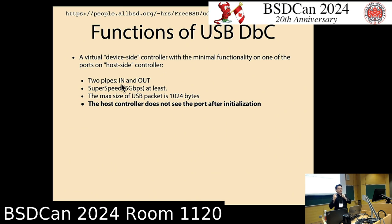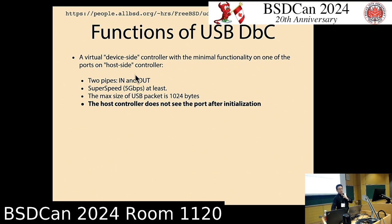An important point: you cannot get interrupts for the debugging capability. Usually, if you have an Ethernet device that converts USB to Ethernet, high-speed communication is required and the pipe supports interrupts to notify data arrival. But the debugging capability does not have an additional interrupt pipe — it is just a simple in and out, similar to a three-wire legacy serial port connection.